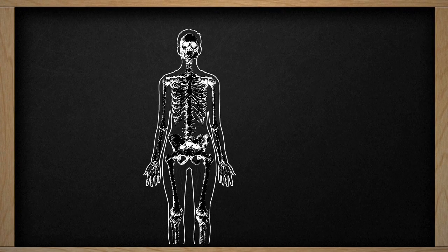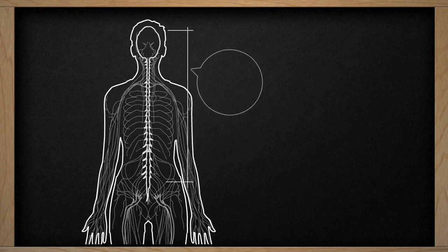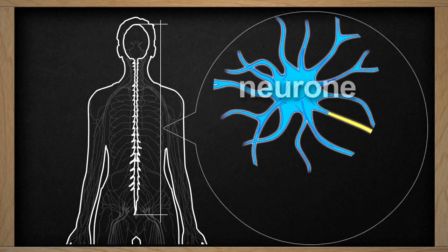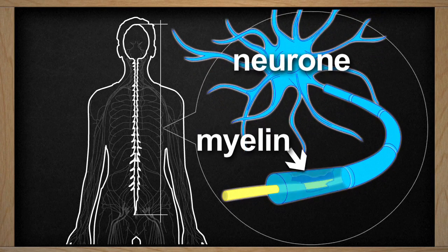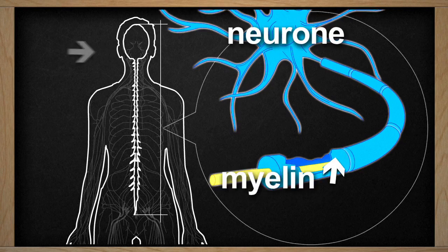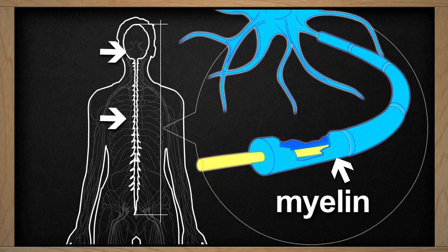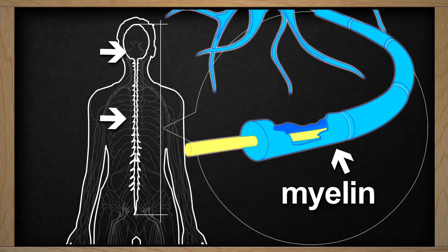Multiple Sclerosis, or MS, is an inflammatory disease affecting the central nervous system. It worsens as the body's immune system damages a substance called myelin, which protects nerve fibers in the brain and spinal cord.